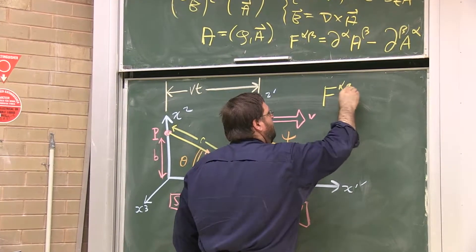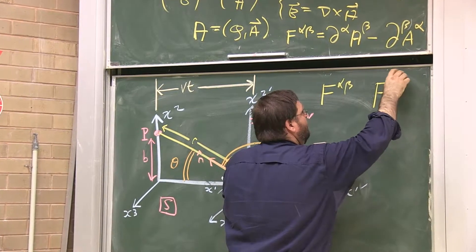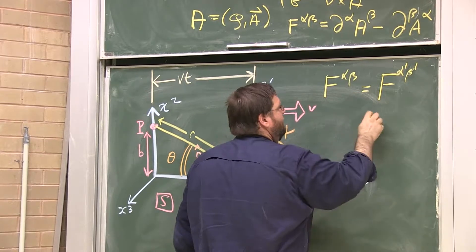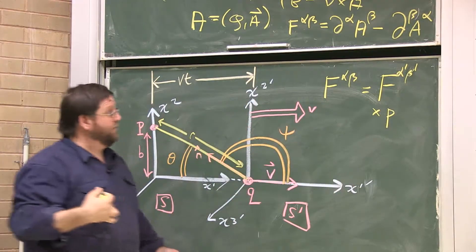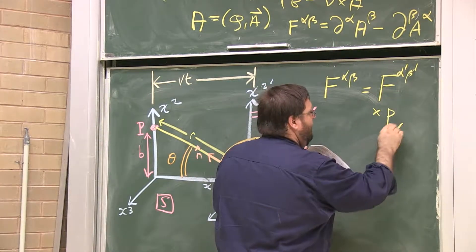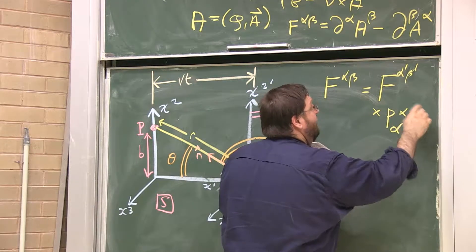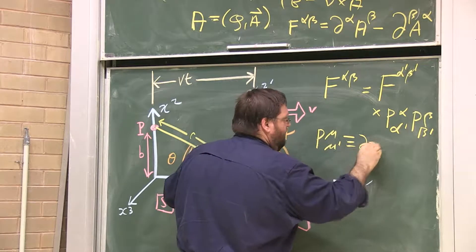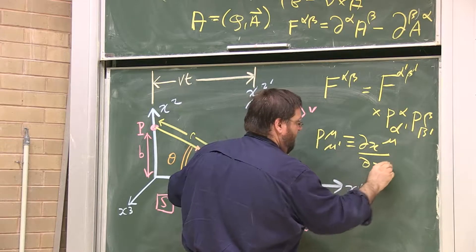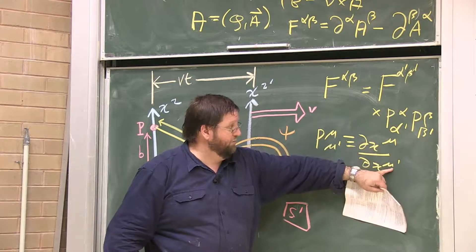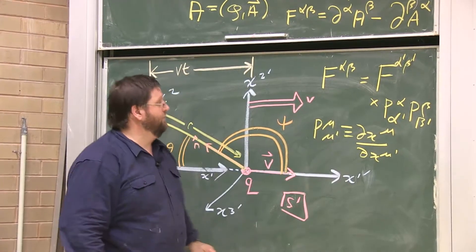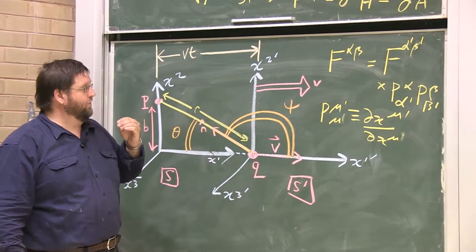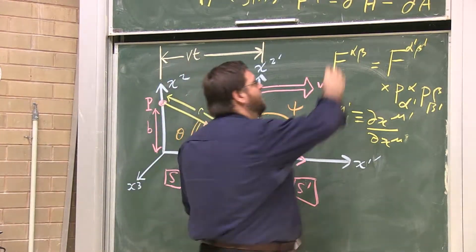Since the Faraday tensor is a tensor, it transforms as a tensor. The transformation law for this object, with primed and unprimed frames, involves multiplying by p's — the partial derivatives of new coordinates with respect to old ones. I need to sum over alpha-prime and beta-prime indices, replacing them with free indices alpha and beta. These p's can be read off directly from the Lorentz transformations — so the Faraday tensor transforms as a tensor.